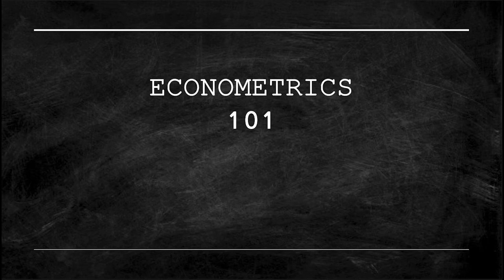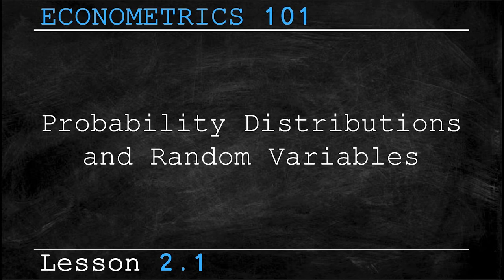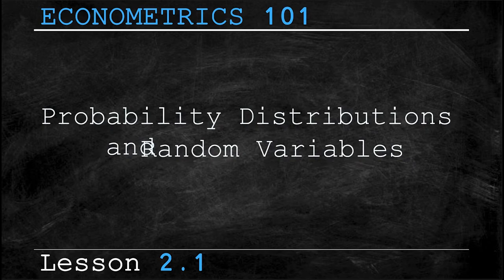All right everyone, welcome back to the Econometrics 101 series. This week we're covering lesson 2.1 and that will be focusing on probability distributions and random variables. So let's begin with some simple terms and definitions you should already be familiar with if you've taken a probability or statistics course in the past.